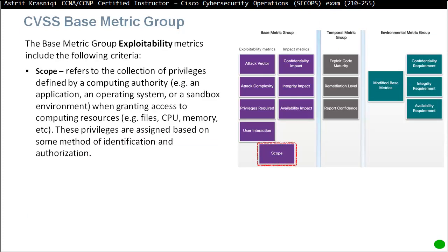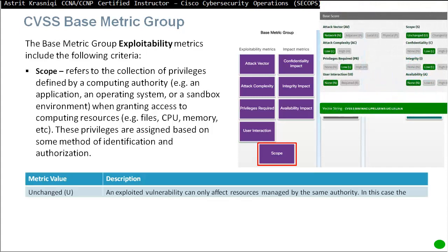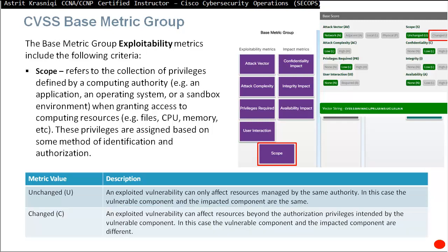The last exploitability metric is scope. This refers to the collection of privileges defined by a computing authority when granting access to computing resources. We have Unchanged — an exploited vulnerability can only affect resources managed by the same authority, meaning the vulnerable component and impact component are the same — or Changed — an exploited vulnerability can affect resources beyond the authorization privileges intended by the vulnerable component, meaning the vulnerable and impact components are different.